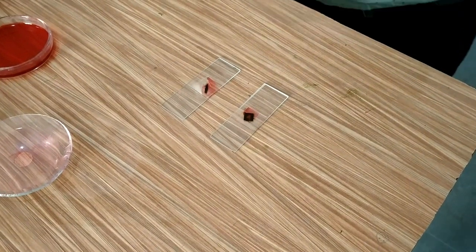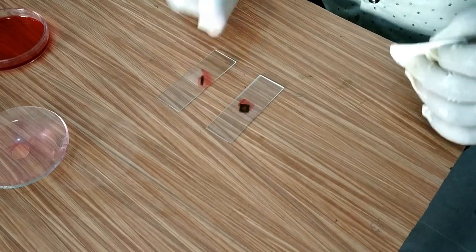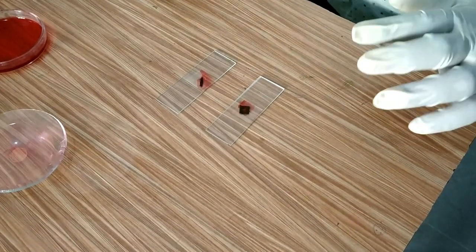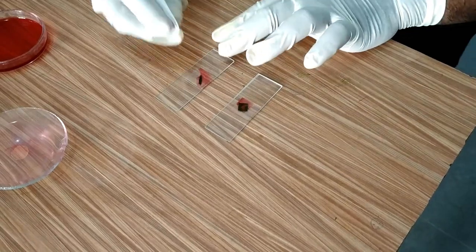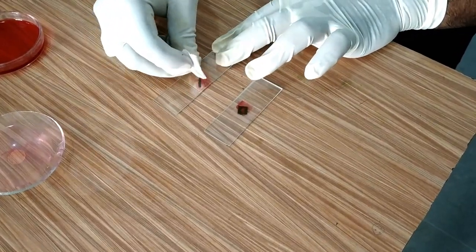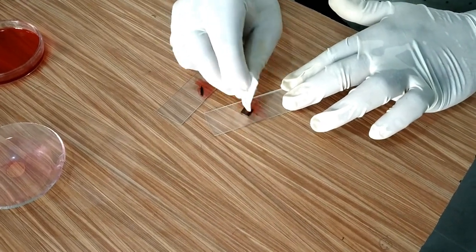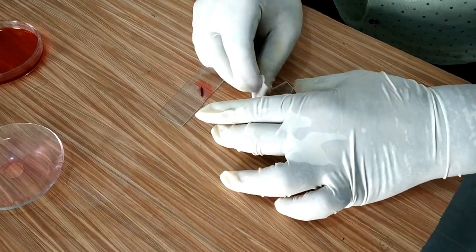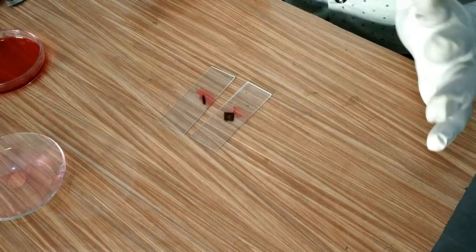After placing the cover slip, if there is excess stain coming out from the edges of the cover slip, then I will use absorbent paper to soak the excess stain. So now your slide is ready for further observation.